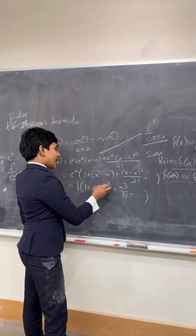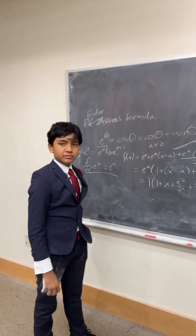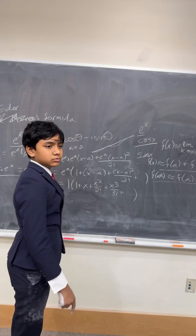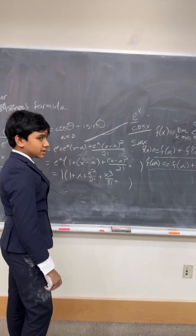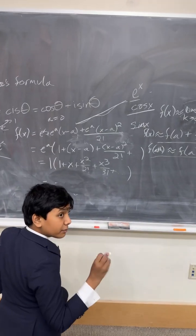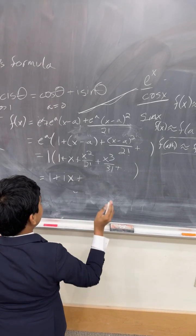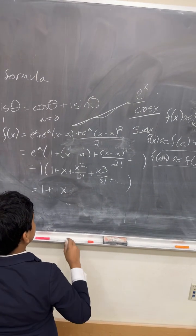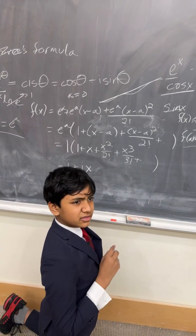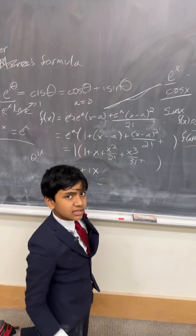Instead of x, let's plug in ix — that's the part I was missing that Dr. Khan showed. So, we get 1 plus ix, plus... The thing about i is that i squared is minus 1. So we get minus x squared over 2 factorial, minus ix cubed over 3 factorial, and it alternates every 4 turns, so it turns normal again at x to the 4th, plus dot dot dot.